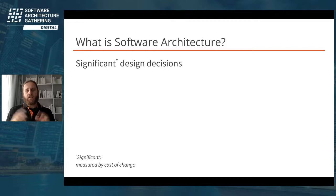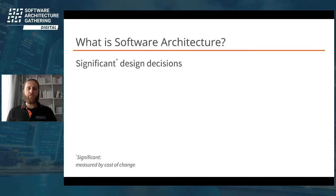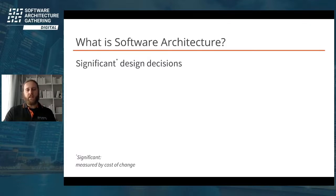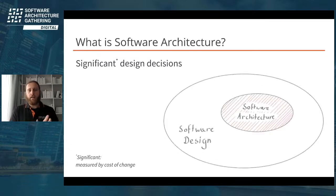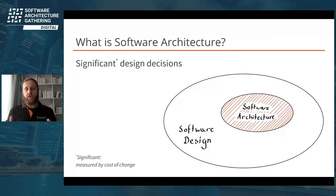The second thing is the question of what is the difference between software design and software architecture. Grady Booch says: not all design is architecture. Architecture represents the significant design decisions that shape a system, where significant is measured by cost of change. That means all architecture is design, but not all design is architecture. I've created a little Venn diagram to make that clear.